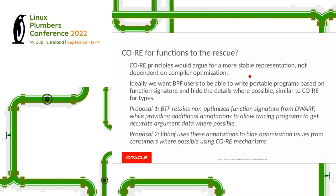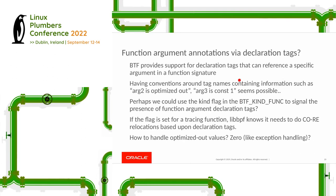Can we use CO-RE mechanisms to insulate users from the fact that arguments aren't in the registers they'd normally expect due to optimizations? This comes back to a suggestion from Jung-Hong about using BTF declaration tags that can reference a specific argument in a function signature. Maybe we can have conventions around tag names which tell us if an argument is optimized out or is a constant, similar to how GDB tells you an argument was 'optimized out' when you hit a breakpoint. Then we could use that information to populate relocations.